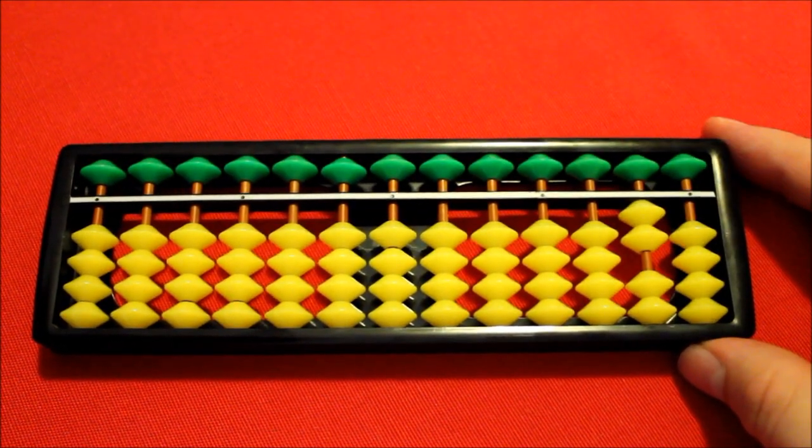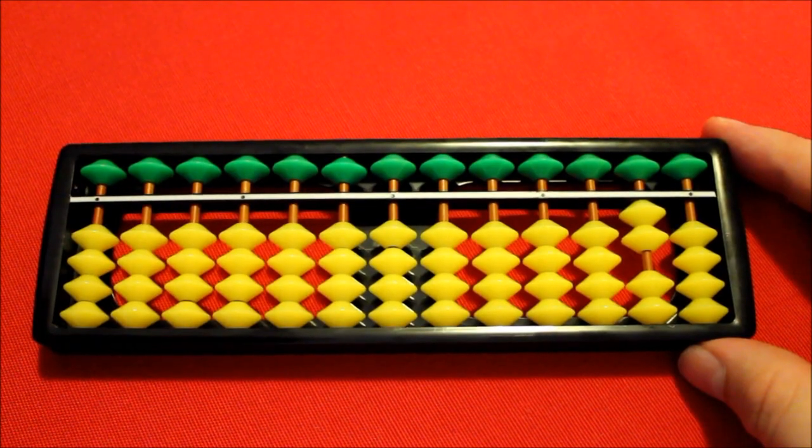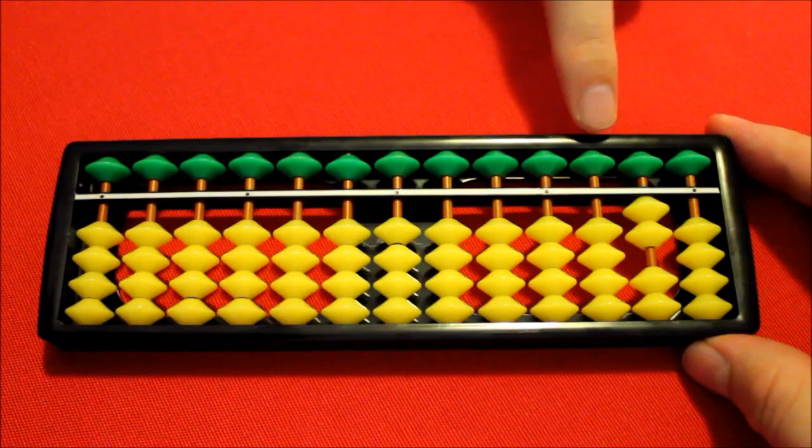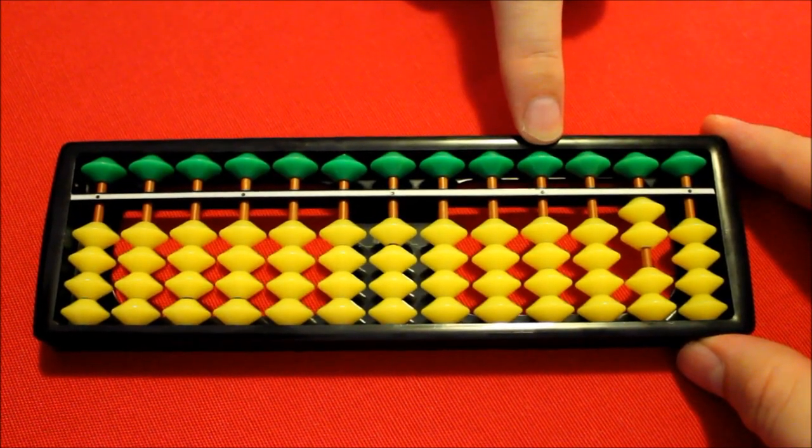So as you can see, the soroban has place value. In the way that we're using it, this is the ones, this column is the tens, the hundreds, the thousands, and so on.